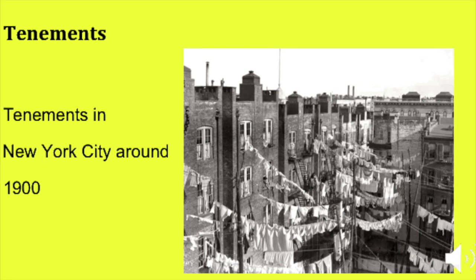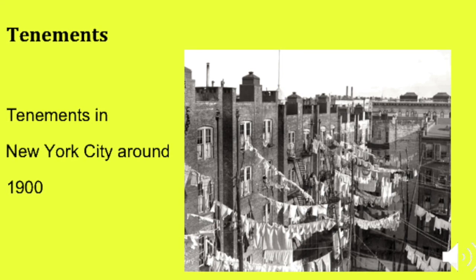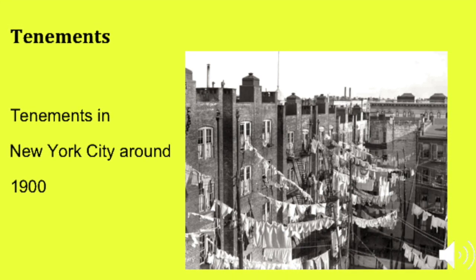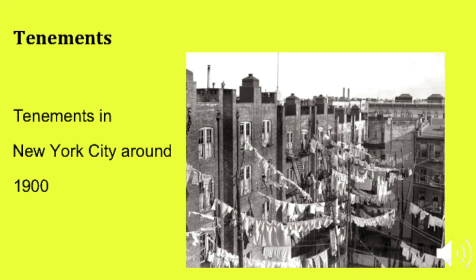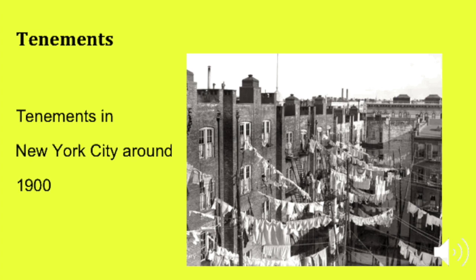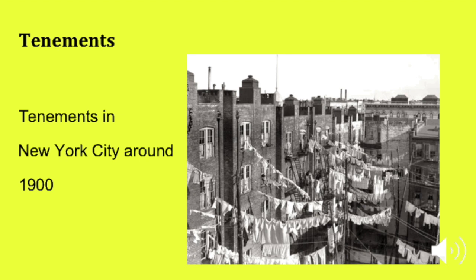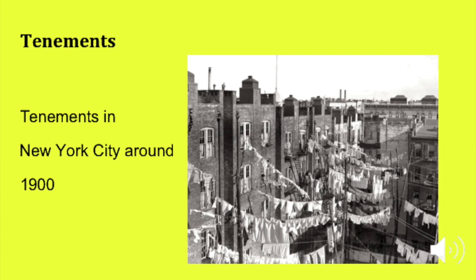Single rooms were commonly occupied by multiple families or as many as a dozen single occupants and did not have private bathrooms. Many units also lacked running water and electricity, and some lacked windows for ventilation or natural light. These living conditions had serious consequences for residents. Tenement dwellers in New York suffered from much higher rates of infectious diseases, infant mortality, and crime than those living in less densely populated and impoverished areas of the city.